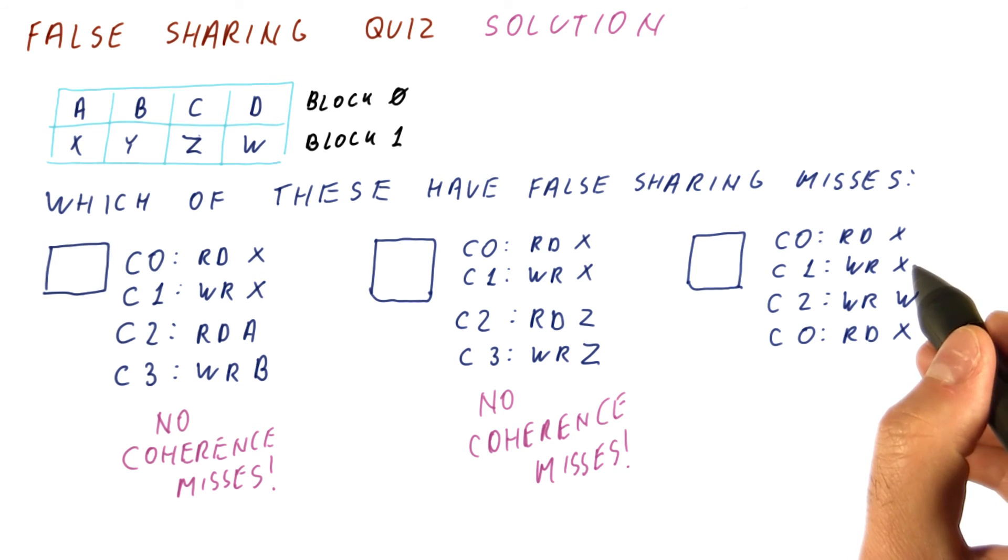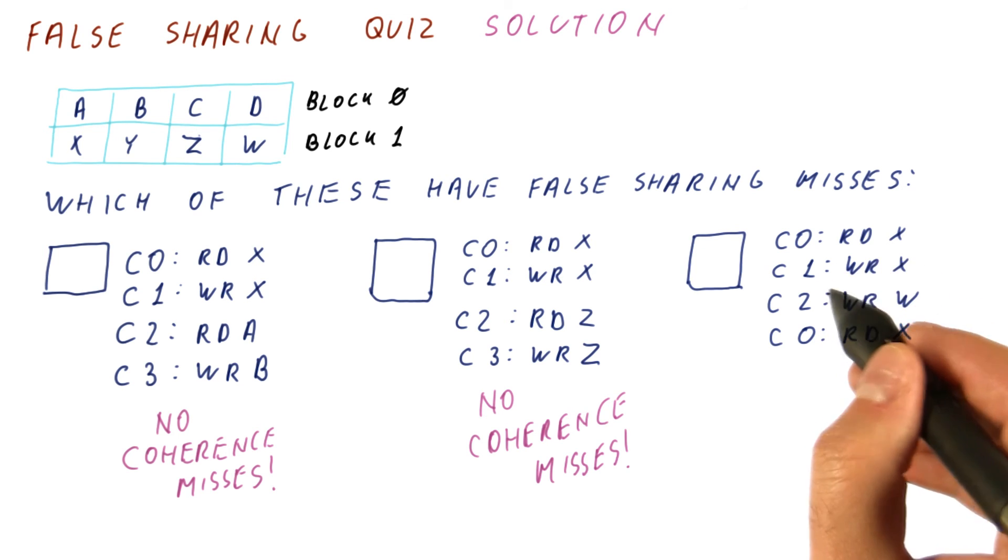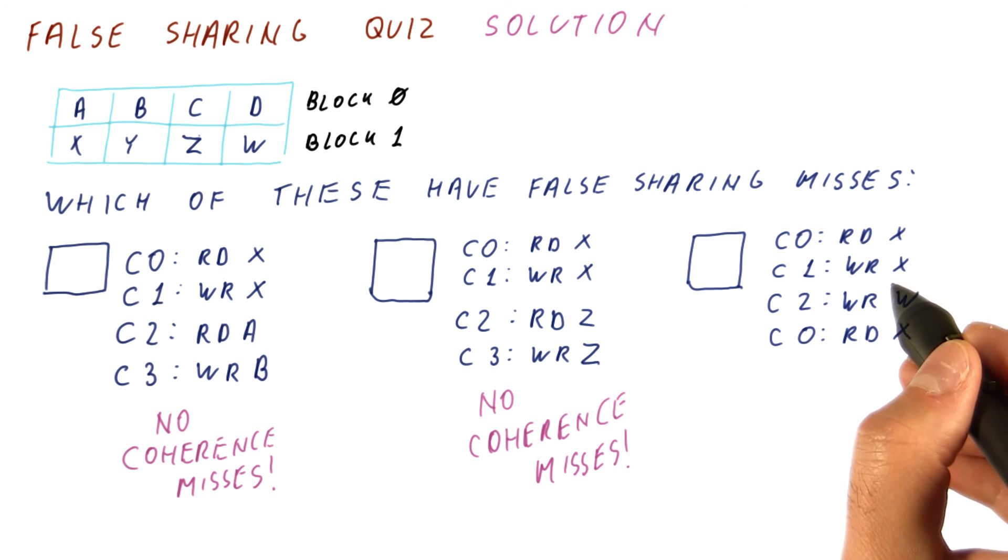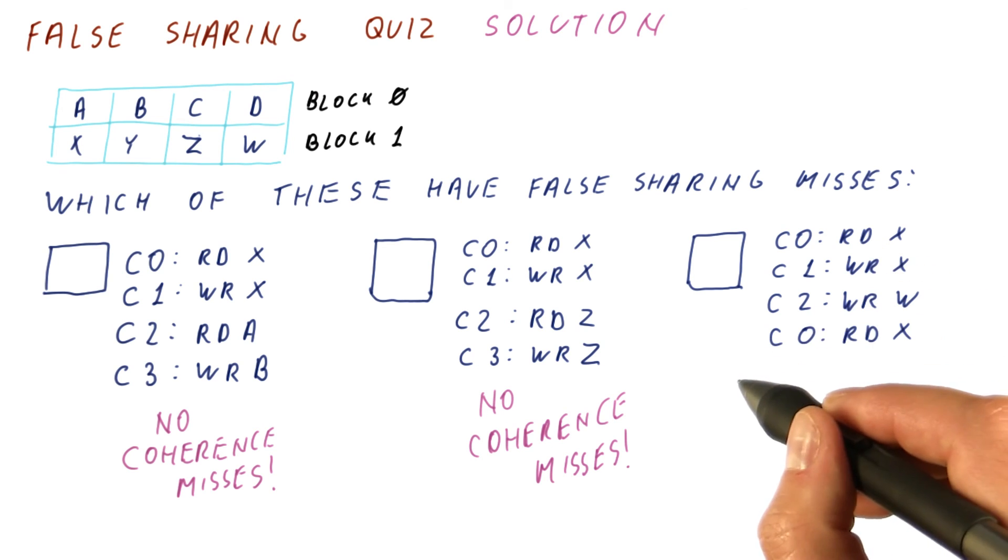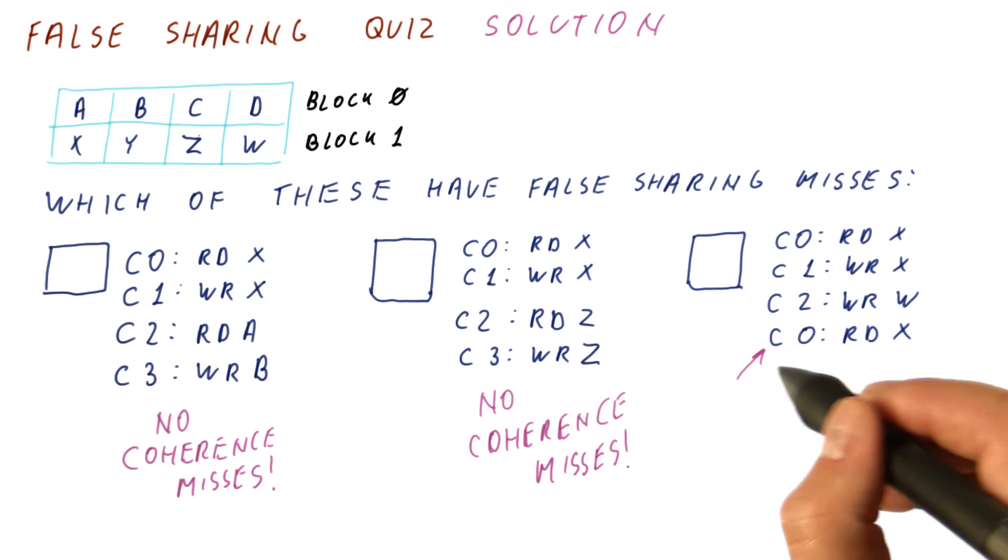We got invalidated because somebody was trying to write the same word that we were accessing. So this is actually a sequence of three compulsory misses followed by a true sharing coherence miss.